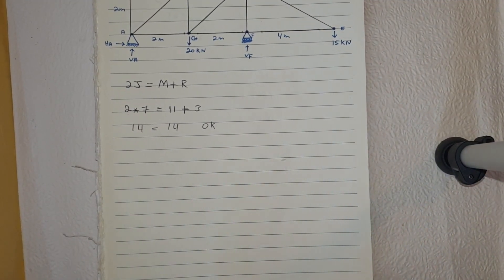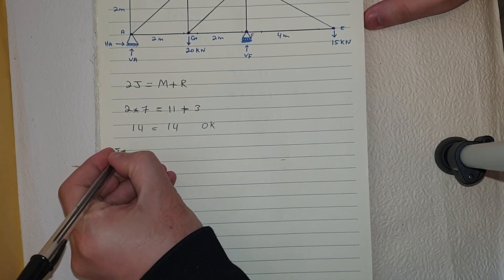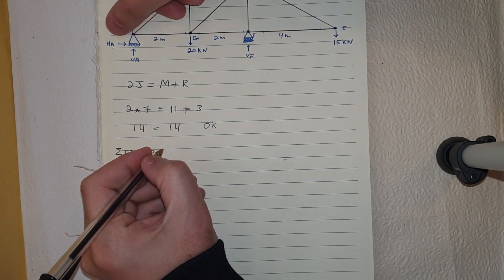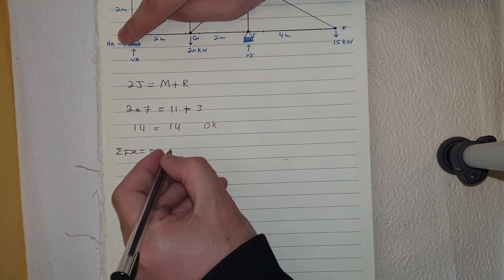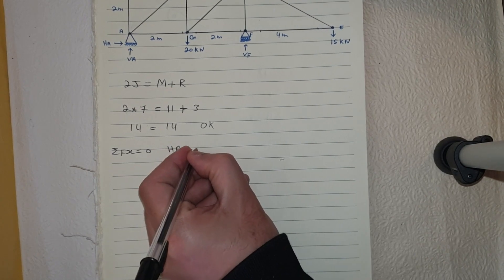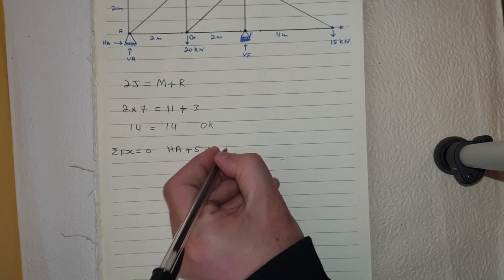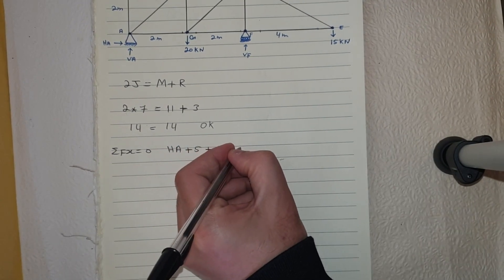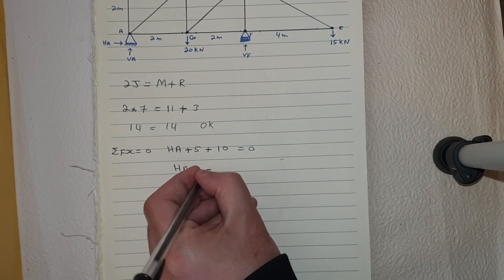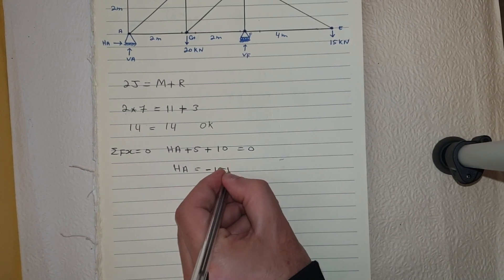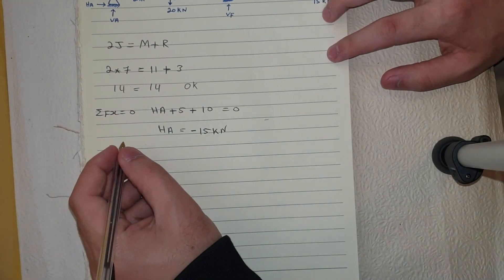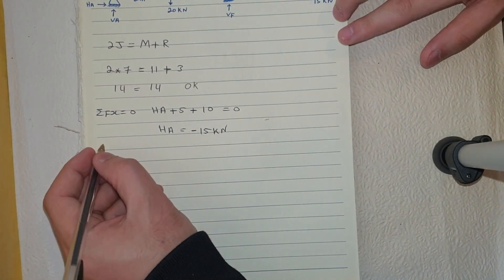Now I'm going to solve the reactions first. Taking the summation of Fx = 0: HA plus 5 (acting in the same direction) plus 10 equals zero, so HA = −15 kN.